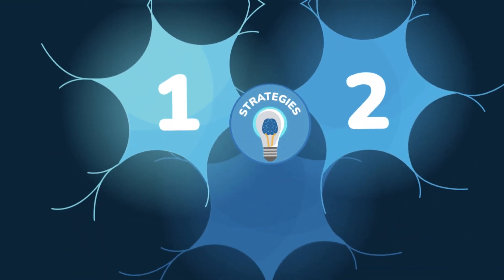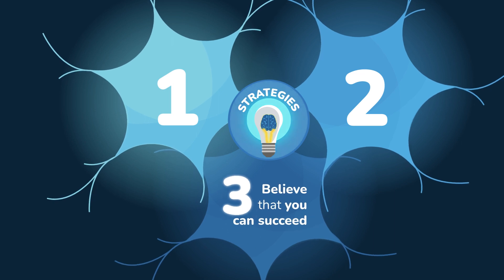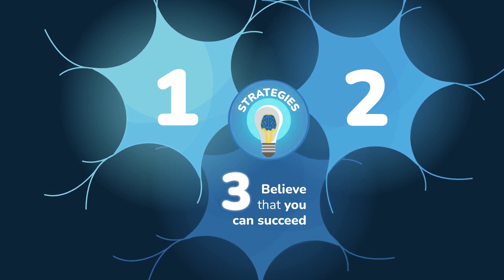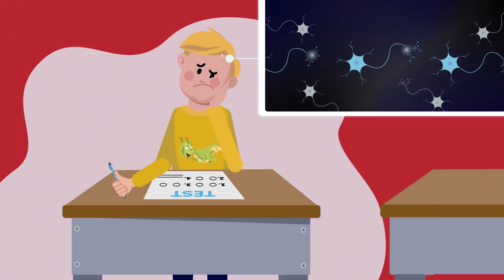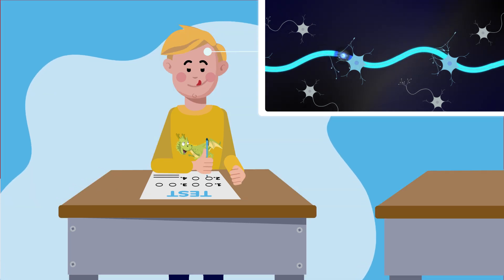Finally, the third strategy is to believe that you can succeed. This helps your brain get into action. When you think you can't succeed in a task, your brain gives up. It doesn't make any more effort and doesn't activate its neurons. However, when you believe that you can take on the challenge, the connections in your brain are activating and strengthening, allowing you to improve and succeed.